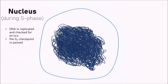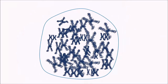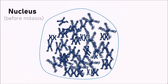As mitosis is about to happen, all of the DNA condenses down into units called chromosomes. Notice how the animation shows the DNA condensing only into two chromosomes — obviously this happens to all of them. Shown here now are all the chromosomes, and the cell is now about to go through mitosis.